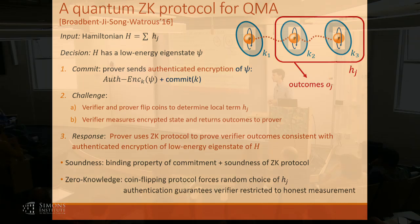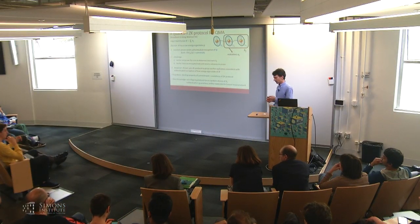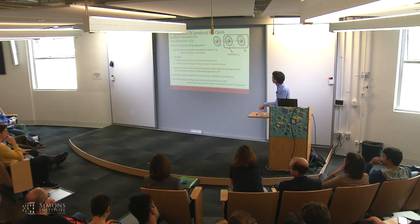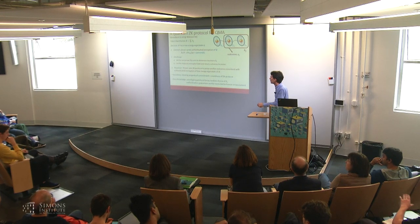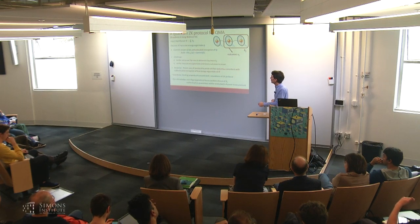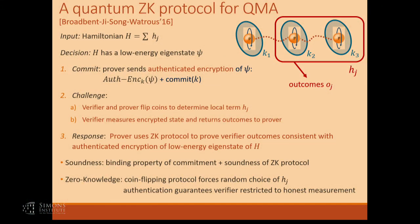Is it so that what you're proving in step three is an NP statement? Why would it not be? If you have all the classical information at that point, you can classically verify that the statement holds. You have the outcomes, you have the keys, you decode the outcomes to a certain value, interpret that value as the outcome of a measurement on the quantum state, and check if it's the outcome you expected. So it's entirely classical.